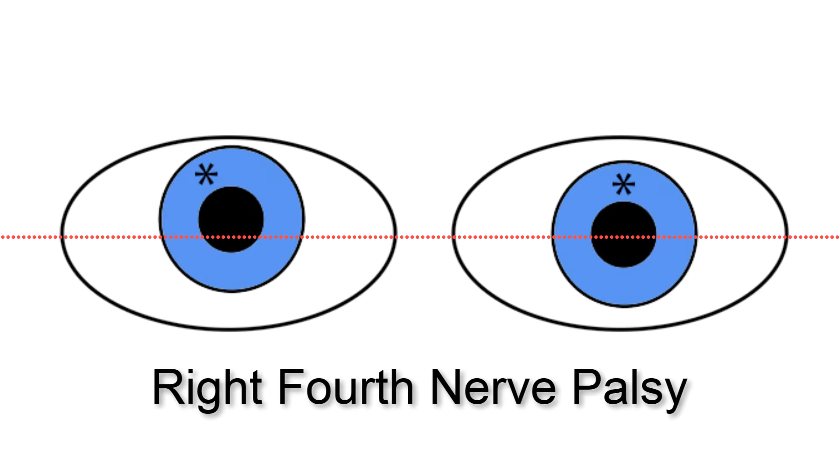Step 1. In straight-ahead gaze, the right eye is higher than the left eye, a vertical separation known as hypertropia. The higher eye is towarded outward as indicated here by the displaced asterisk.